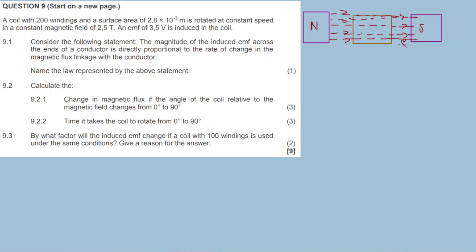The magnetic field strength is 2.5 teslas. Here's the coil — when we rotate the coil inside this magnetic field, current flows and an EMF is induced according to Faraday's law. More about that a bit later. Let me provide a visual of the statement to help with our calculations.